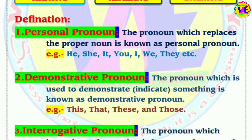The second kind is demonstrative pronoun. The pronoun which is used to indicate or demonstrate something is known as demonstrative pronoun. This kind of pronoun helps us to indicate something. Its examples are: this, that, these, and those.